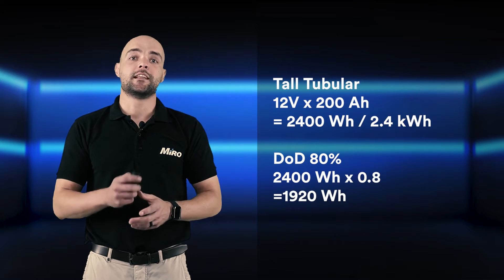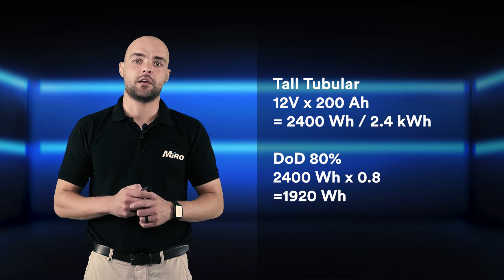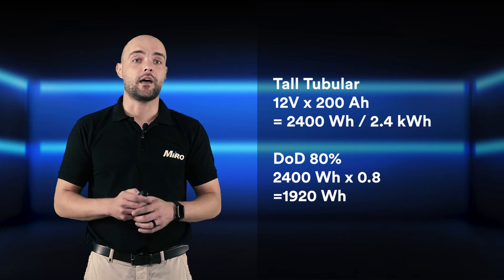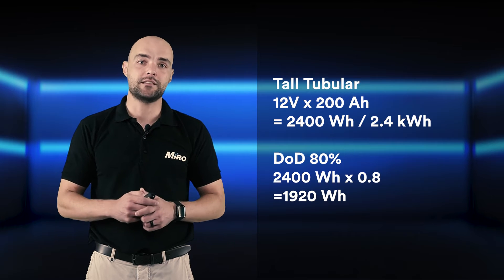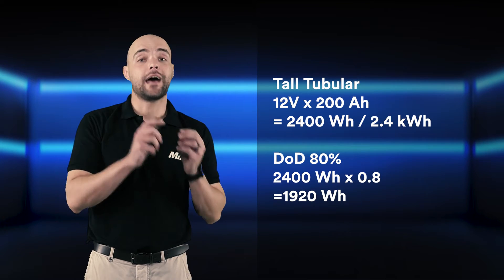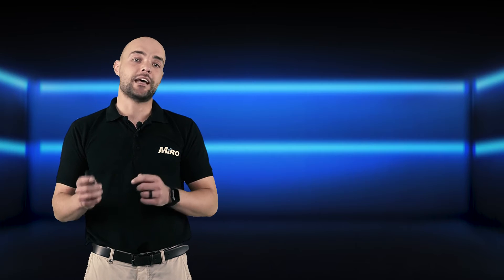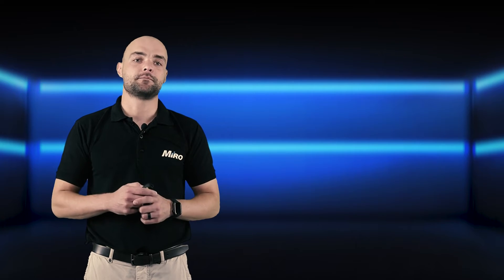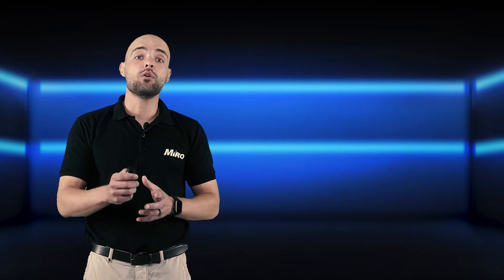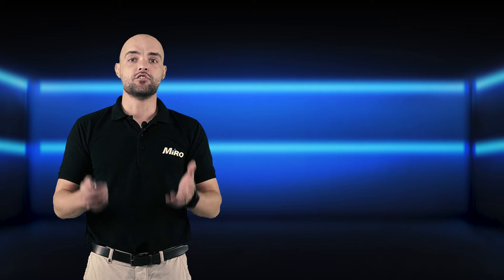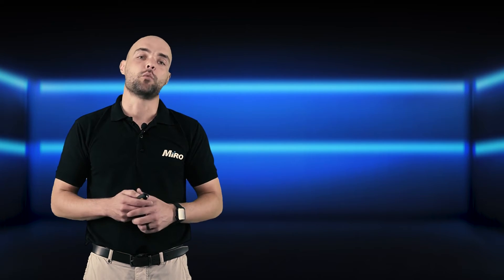For the tall tubular batteries, this is also a 12 volt 200 amp hour battery, which gives us 2400 watt hours or 2.4 kilowatt hours capacity. As the DoD is limited to 80%, this means we will have 1920 watt hours of usable capacity. For the lithium battery, the cells are connected in series and the voltage is 48 volts at 100 amp hours, giving a capacity of 4800 watt hours. At a DoD of 80%, the usable capacity will be 3840 watt hours.